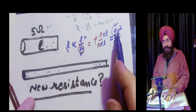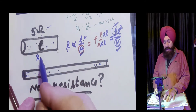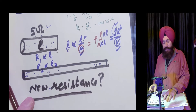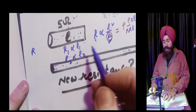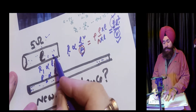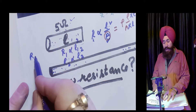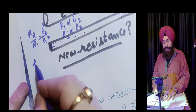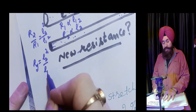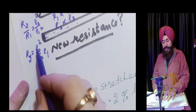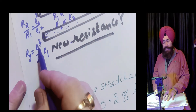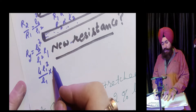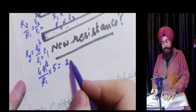Since volume V is constant, R depends only upon L squared. So R1 is proportional to L1 squared and R2 is proportional to L2 squared. Dividing: R2 upon R1 equals L2 squared upon L1 squared. Because the length is doubled, L2 equals 2L1, so R2 equals 4L1 squared upon L1 squared times R1. R1 is 5 ohms, so the new resistance becomes 20 ohms.